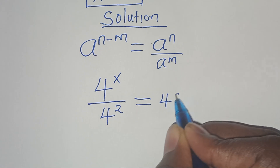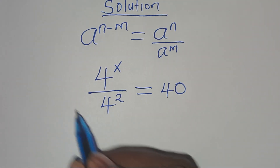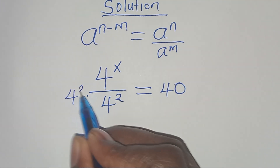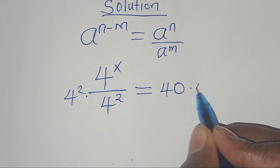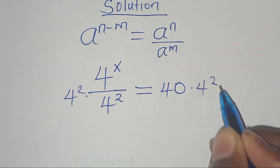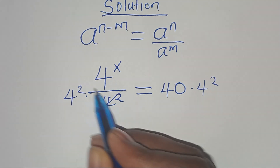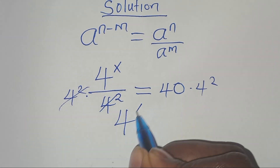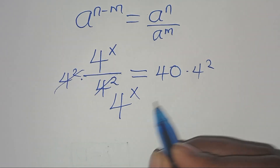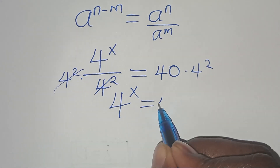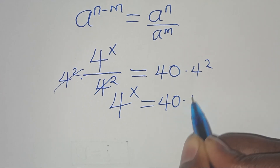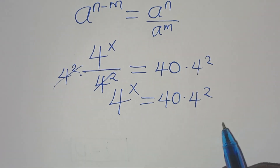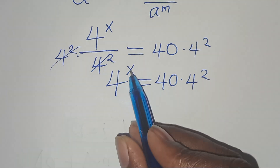Now let's multiply both sides by 4 to the power of 2, so that we have 4 to the power of x equal to 40 multiplied by 4 to the power of 2.